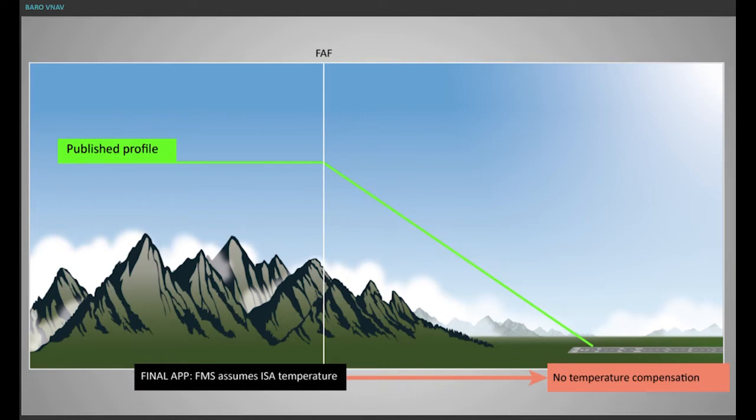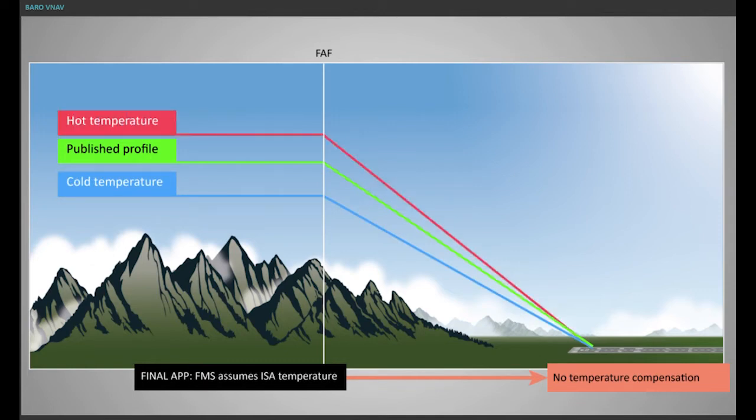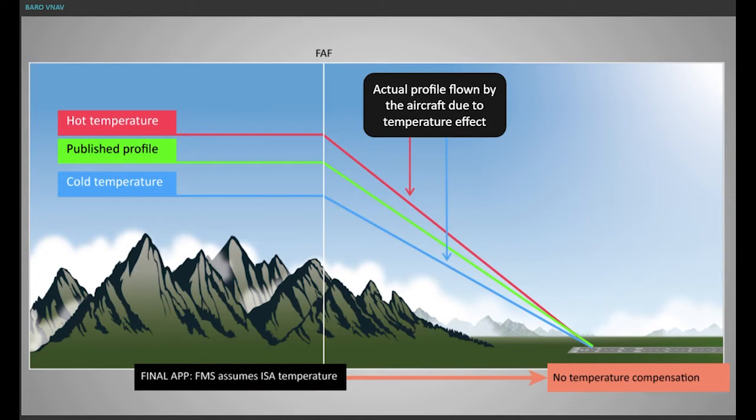Compensation for temperature deviation from the ISA temperature is ensured on final approach by an obstacle clearance, which is integrated into the vertical profile design.